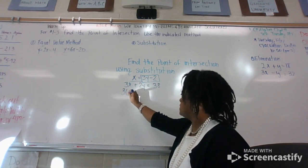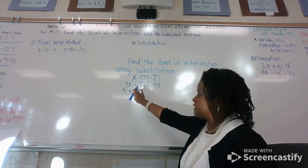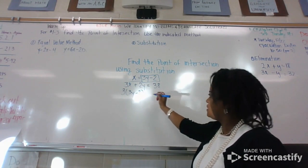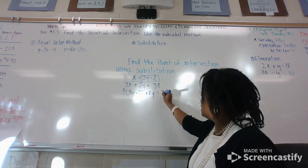Three parentheses, three y minus two. The rest of the equation stays the same. Plus two y equals 38.